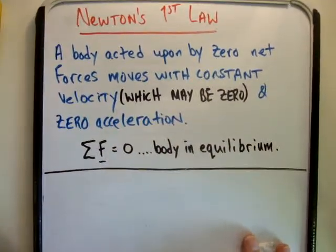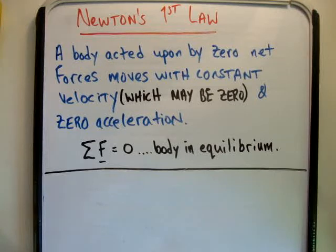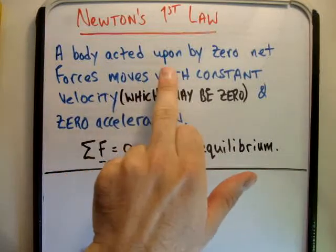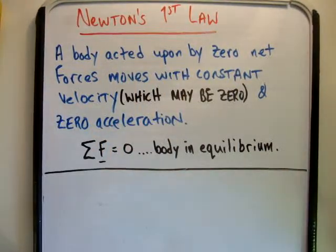Equilibrium means that a body is at rest. So a body acted upon by zero net forces - where the overall result of all the forces, and that doesn't mean there are no forces acting on it, it just means the overall result is zero.